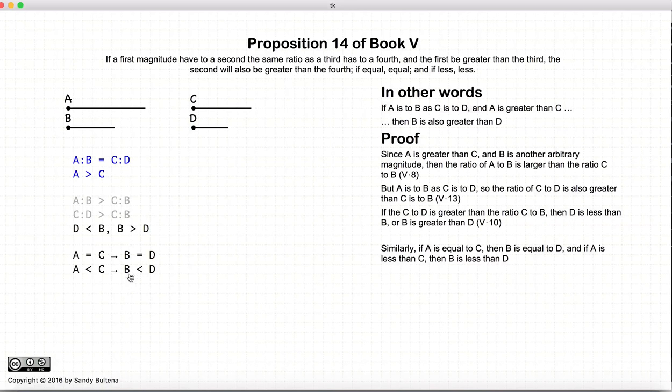If a is less than c, b is less than d. So again, Euclid left this up to the reader to work this out for themselves, but essentially all you have to do is follow the same steps here.